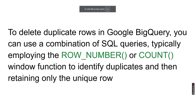To delete the duplicate rows in Google BigQuery, we can use the combination of SQL queries, typically employing the ROW_NUMBER or COUNT window function to identify the duplicates, and then we can retain only the unique rows.